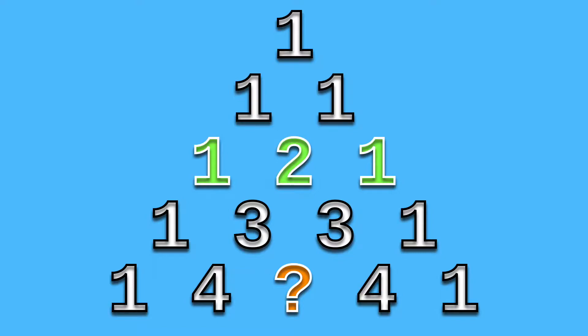The third row is 1, 2, 1. This is formed by bringing down the 1 to make the first 1, adding 1 and 1 to make 2, and bringing down the second 1 to make 1 again.